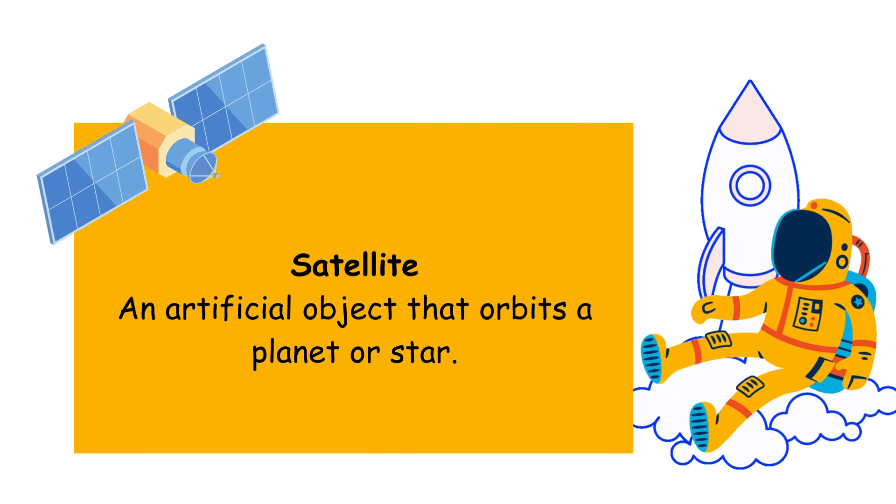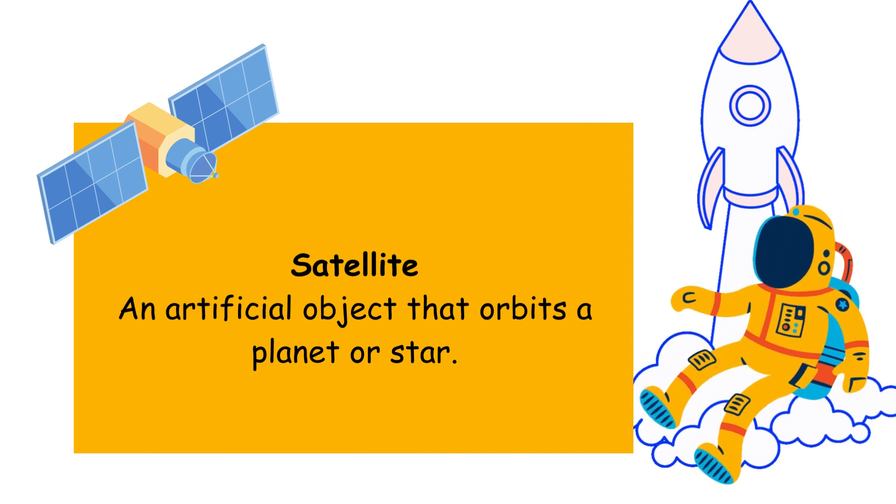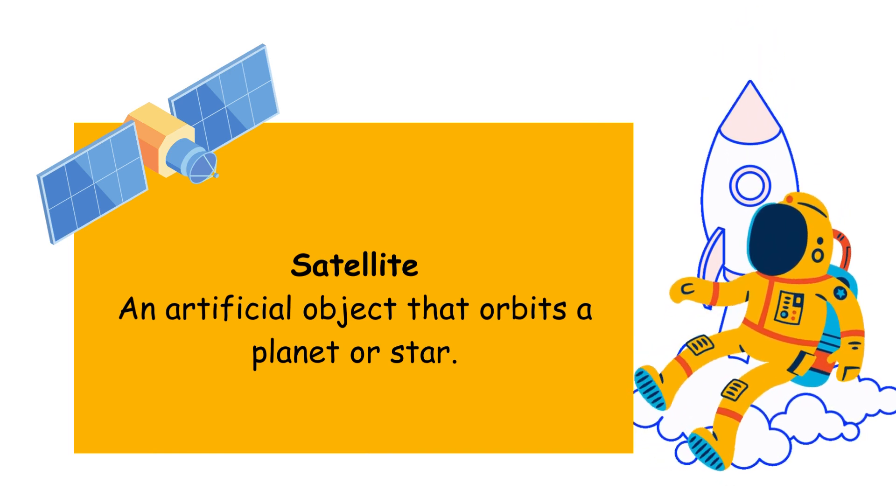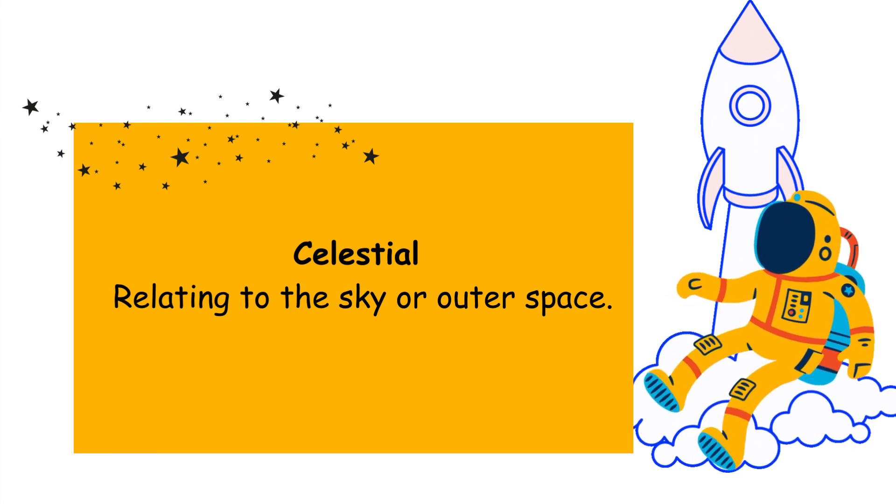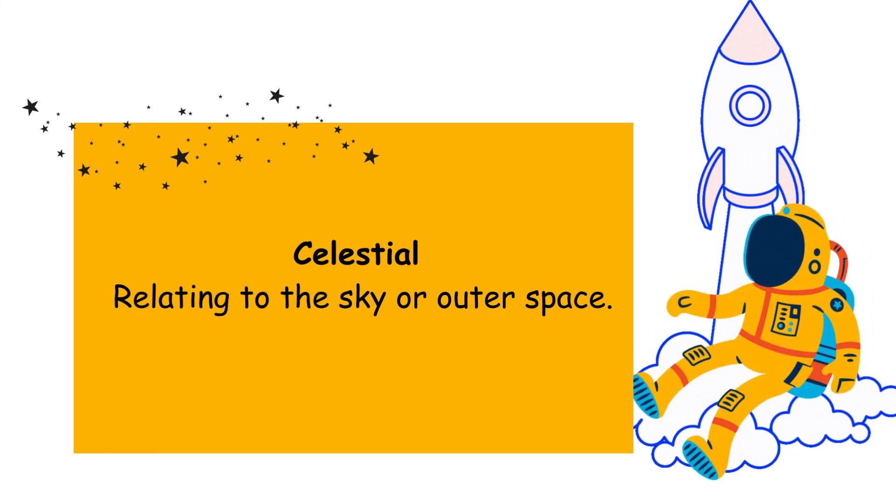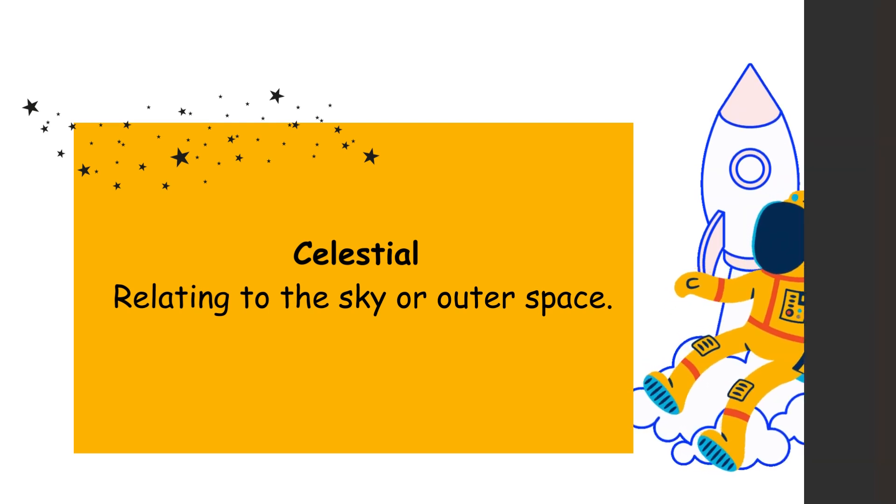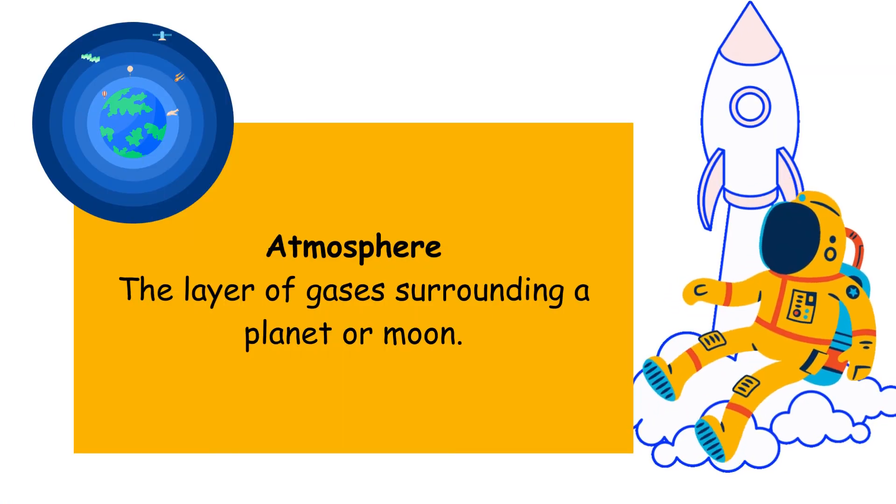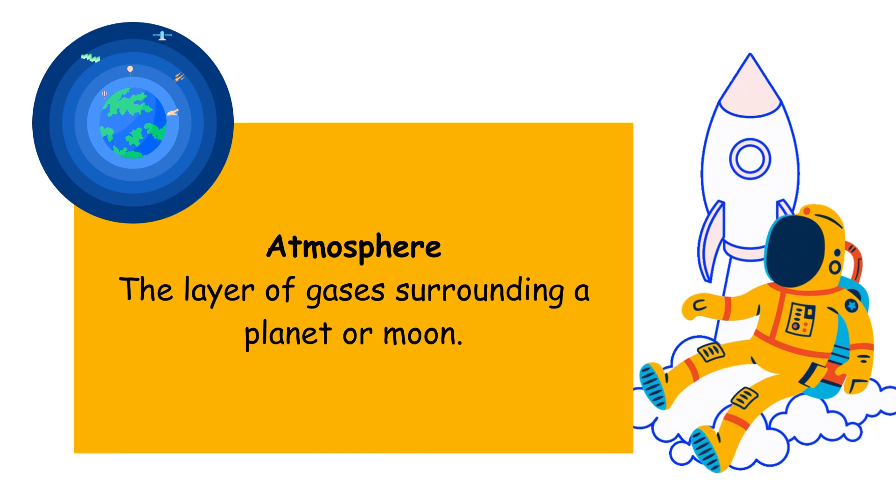Satellite: an artificial object that orbits a planet or star. Celestial: relating to the sky or outer space. Atmosphere: the layer of gases surrounding a planet or moon.